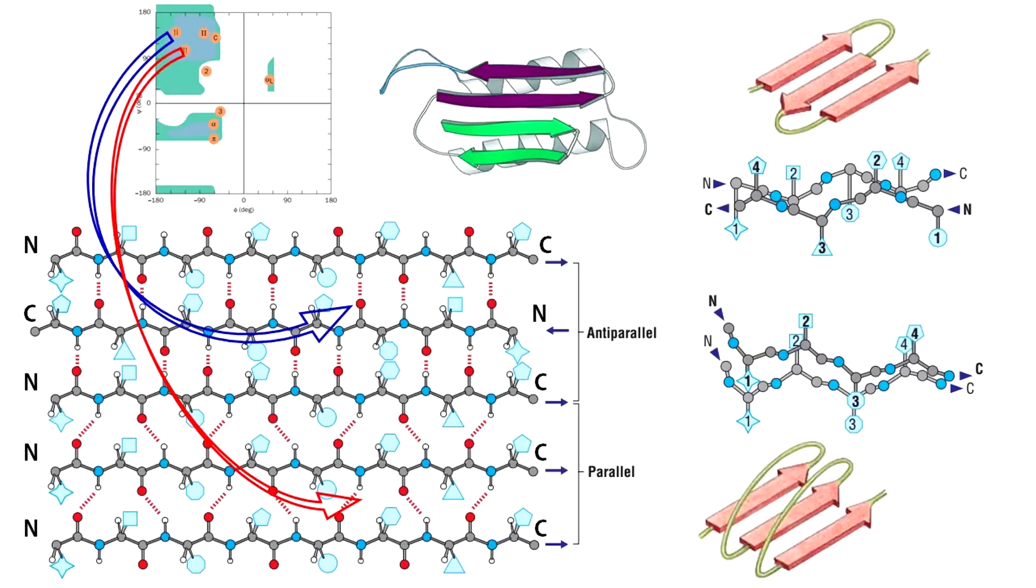Let us discuss beta pleated sheets. Let me remind you that alpha helices involve intra-element main chain hydrogen bonding. In contrast, the beta pleated sheet involves inter-element hydrogen bonds between residues distant in the linear sequence. In beta sheets, two or more strands that may be widely separated in the protein sequence are arranged side by side with hydrogen bonds between the strands.